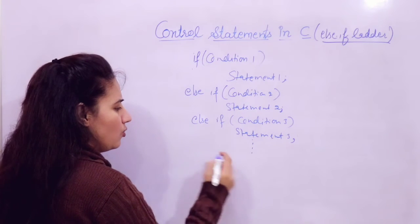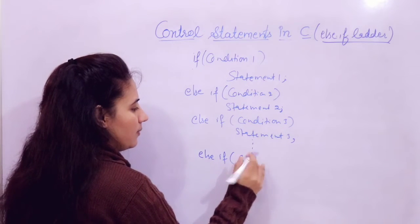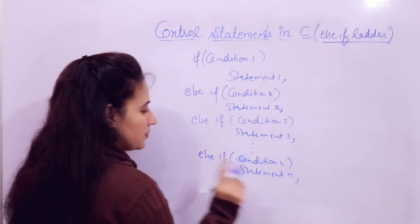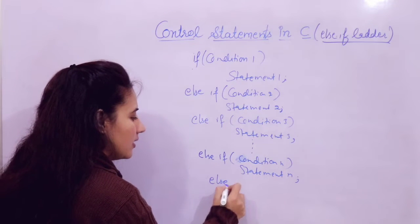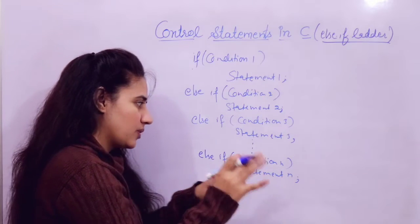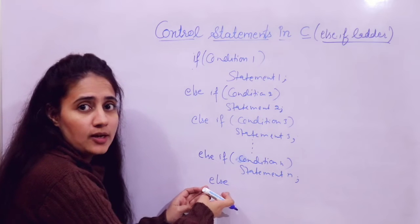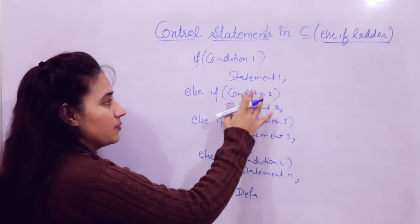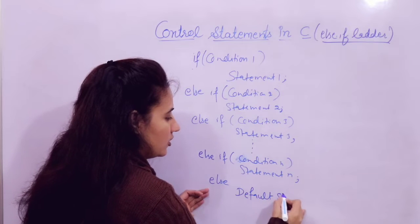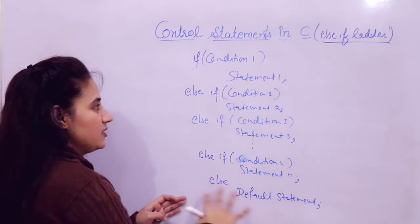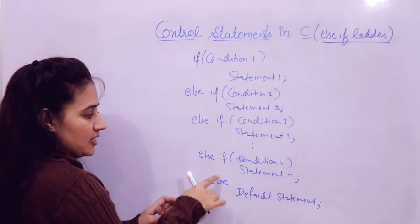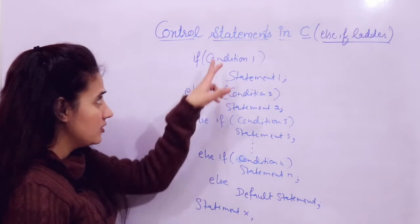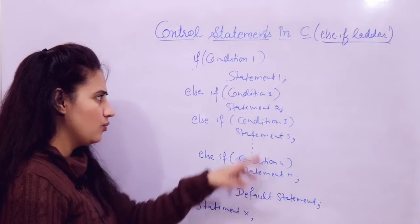Up to N, you can write down multiple conditions — else-if condition N, and for this, statement N would be executed if it is true. After that, a default else block would be there. If none of these conditions are true, that default statement would be executed. And after the else-if ladder, whatever comes next — for example statement X — that is not part of the ladder and will always be executed.